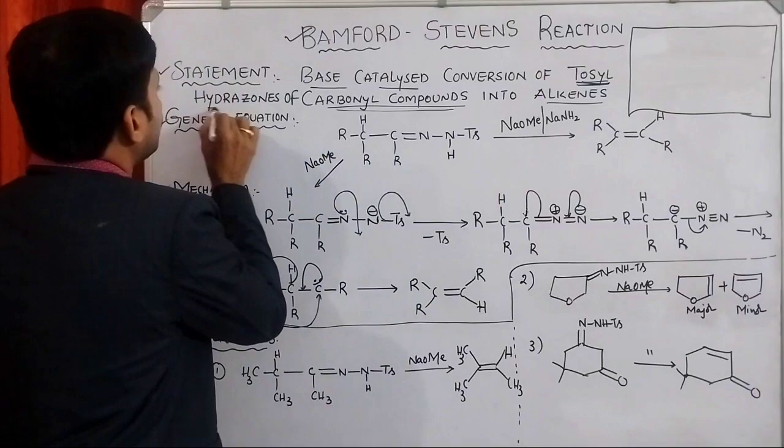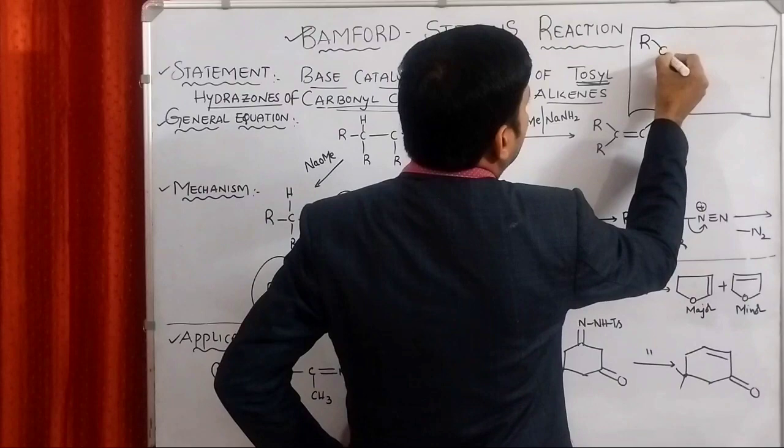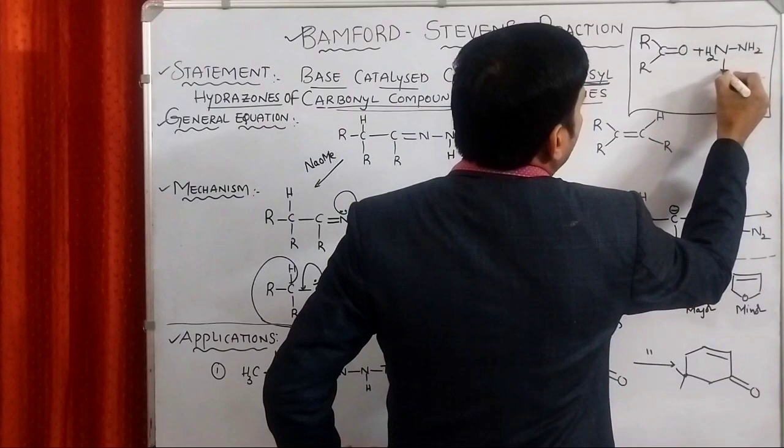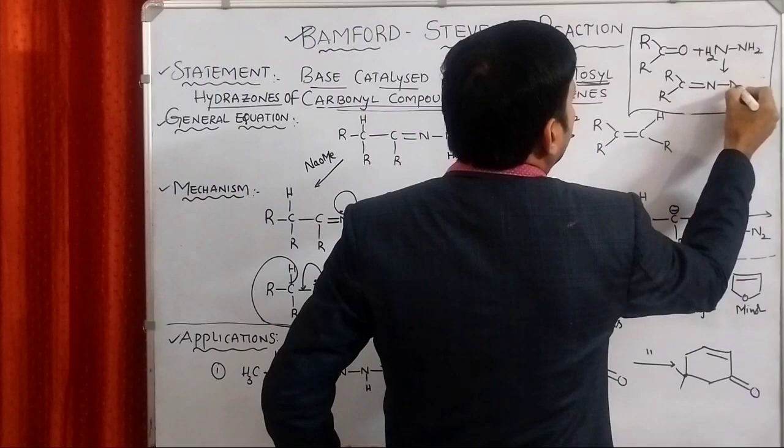We know that the general representation of carbonyl compound is R-C double bond O. If it is treated with hydrazine NH2-NH2, we will come up with the compound R-CR double bond N-NH2. This is hydrazone.